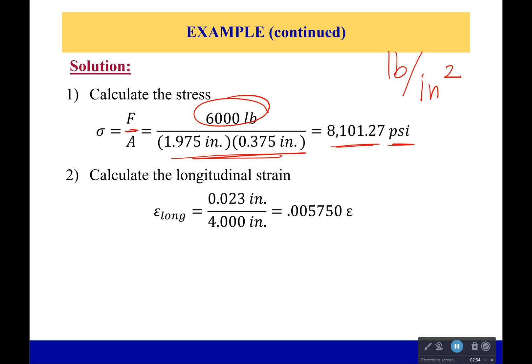So we calculate that, now the longitudinal strain. Remember, long, long, that's the longest direction, usually the length, long. So that would be the longitudinal strain. So it changed by 0.023 inches, that's over a 4 inch length, which gives me 0.005750 strains, just regular strains, not microstrains, regular strains.